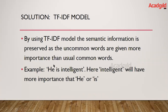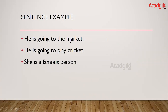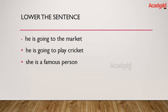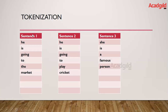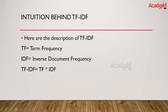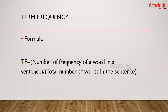Let us understand the intuition behind the TF-IDF model using the same sentences: 'he is going to the market', 'he is going to play cricket', and 'she is a famous person'. The steps include lowering the sentences and tokenization — converting the paragraph into different sentences (sentence one, sentence two, sentence three). TF-IDF consists of two components: term frequency and inverse document frequency, and TF-IDF is their multiplication.